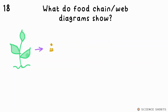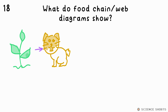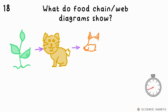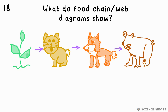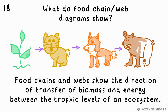Question 18. What do food chains and food web diagrams show? They show the direction of biomass or energy transfer between the trophic levels of the food chain or web.